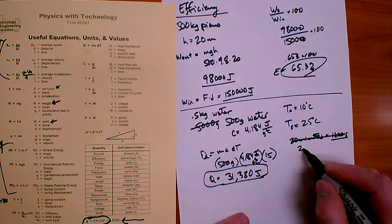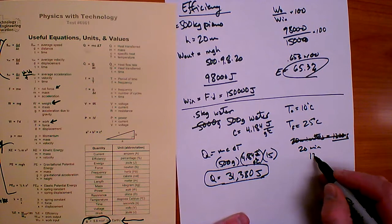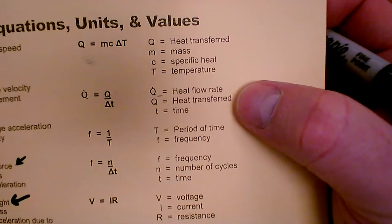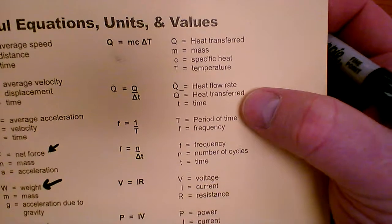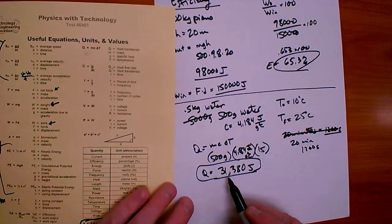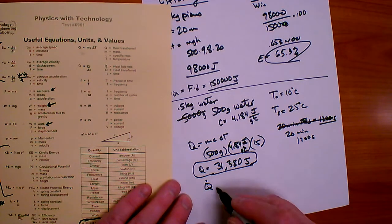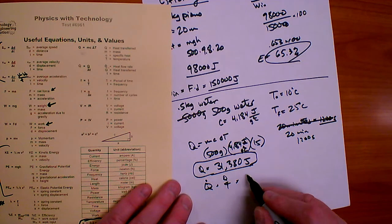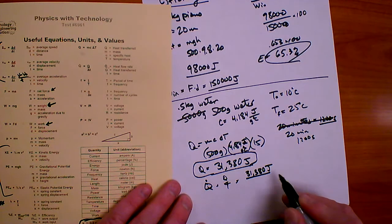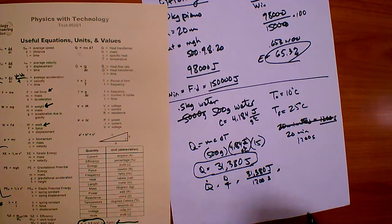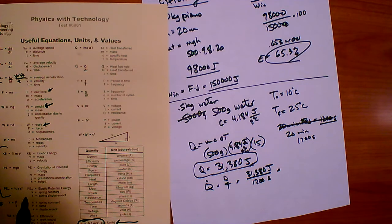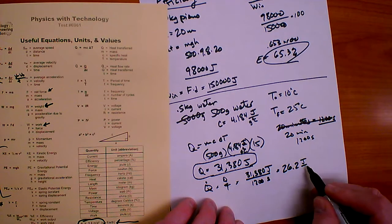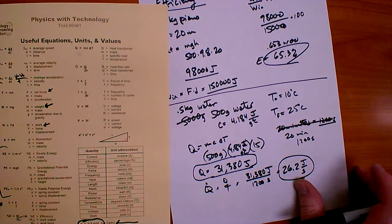The heat flow rate equation is Q-dot equals Q divided by T, where T is time. If 31,380 joules were transferred over 20 minutes (1,200 seconds), the heat flow rate is 31,380 divided by 1,200, which equals about 26.2 joules per second.